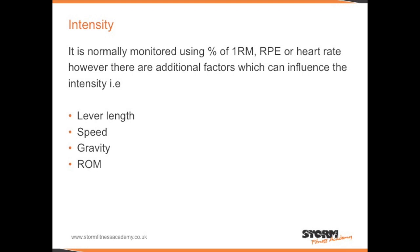The same applies to a push-up: push-ups on the knees shortens the lever, making the exercise easier. Taking the knees off the floor increases the length of the lever, making the exercise more challenging. When we increase the speed of an exercise, this also makes the exercise more challenging — such as explosive lifts or increasing the speed on a treadmill when running. However, we must be aware that it becomes increasingly more difficult to maintain alignment and good posture when we increase the speed.